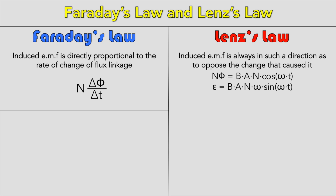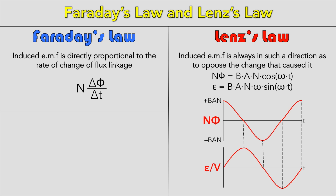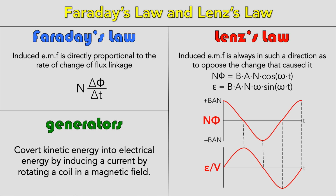Increasing the speed of rotation will increase the frequency and increase the maximum EMF. Increasing B will increase the maximum EMF but will have no effect on frequency. Generators convert kinetic energy into electrical energy, inducing a current by rotating a coil in a magnetic field. If you understand all the content mentioned so far, you could probably deduce just from logic how generators work.